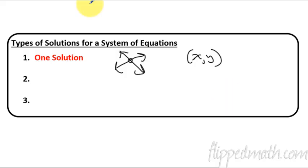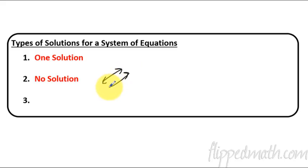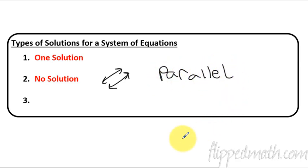Now, it's possible for there to be something other than one solution, and that is no solution. This would be in the situation where your lines never ever cross. So if I have a line like this, how is it possible that a line doesn't cross? It would be parallel. So that's a key word you want to write down there. Parallel lines will never ever cross. That's when you have no solution.